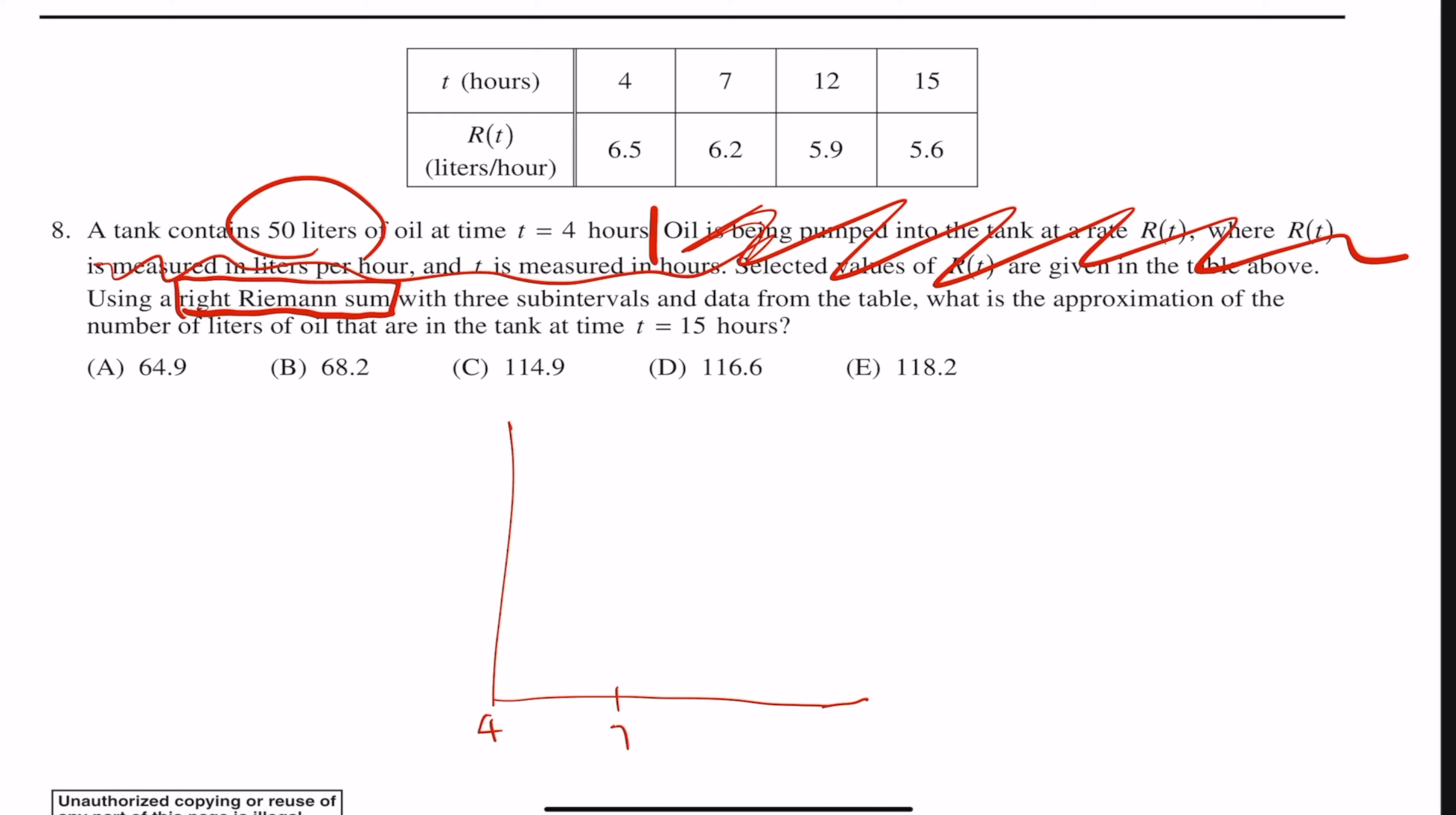So that's going to be four, seven, 12, and 15. And then the points we have are like 6.5, I'm going to draw it like right there. And then we have 6.2, so like right there, 5.9, so like right there, and then 5.6, so like right there.